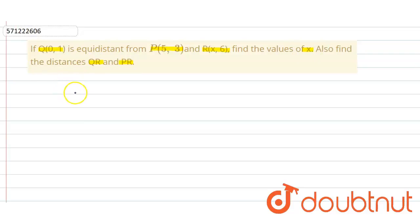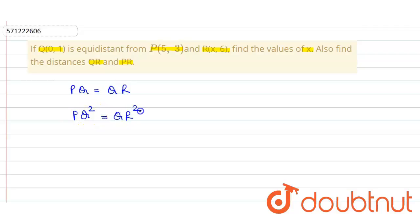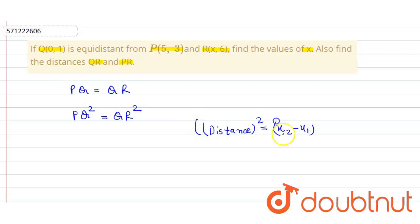We can say that PQ is equal to QR. Both distances are equal, or we can simply write PQ² = QR². Now we use the distance formula: distance² = (x₂ - x₁)² + (y₂ - y₁)².